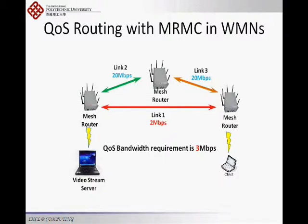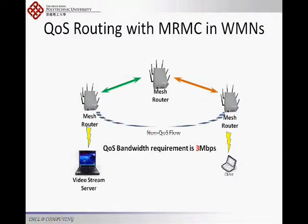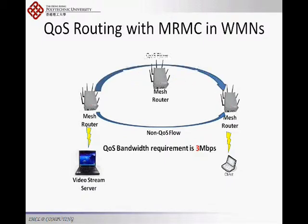According to our QoS and MRMC combined routing protocol, the path containing wireless links 2 and 3, which have higher bandwidth but more hops in total, are chosen. Therefore, the QoS flow can pass through more-hops paths. Meanwhile, the non-QoS flow can still go through the shortest path.